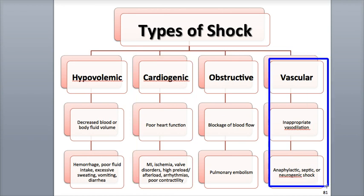If there is a decrease in systemic vascular resistance that leads to a drop in blood pressure, vascular shock can occur, even if blood volume and cardiac output are normal. Inappropriate vasodilation of the arterioles and venules can occur through many different ways. Anaphylactic shock, occurring as a result of a severe allergic reaction like a bee sting or antibiotic allergy, causes the release of chemicals such as histamine that trigger vasodilation. Neurogenic shock is caused by head trauma, which damages the cardiovascular center, resulting in vasodilation.